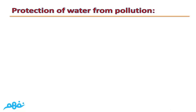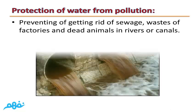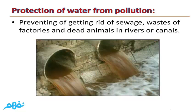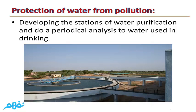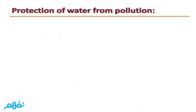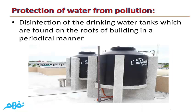How can we protect water from pollution? First, prevent disposing of sewage, factory wastes, and dead animals in rivers or canals. Second, develop water purification stations and carry out periodical analysis of drinking water. Third, disinfect and clean drinking water tanks found on the roofs of buildings in a periodical manner.